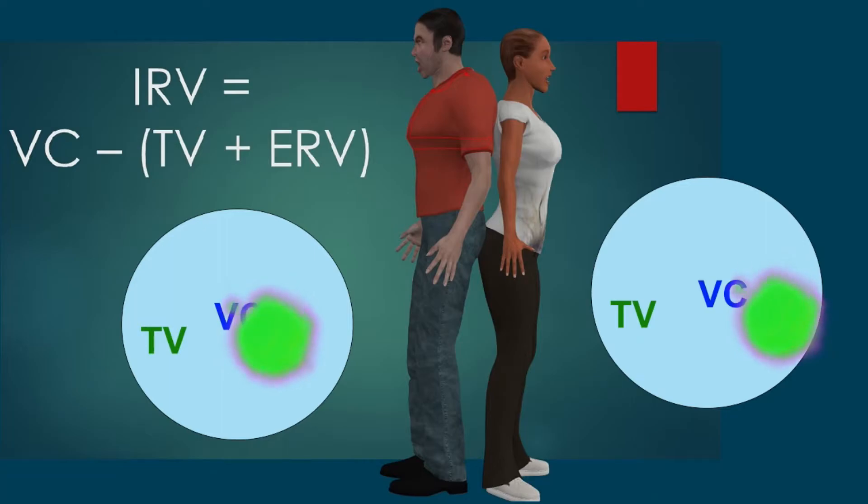So the way you would measure it is you would inhale as much as you could, and you exhale as much as you could, and this represents three values, TV plus ERV plus IRV.